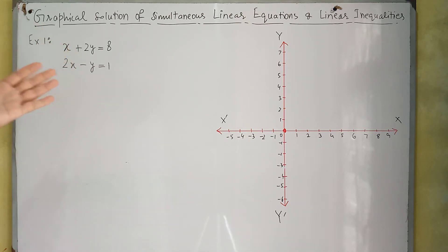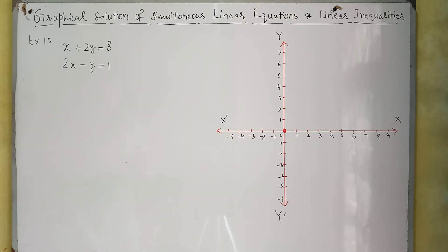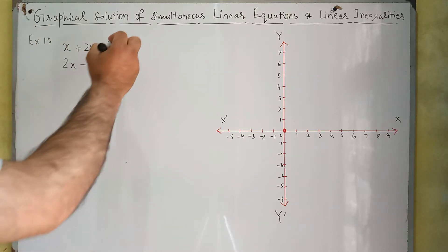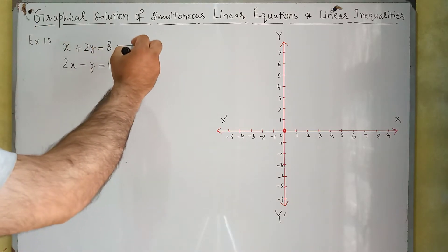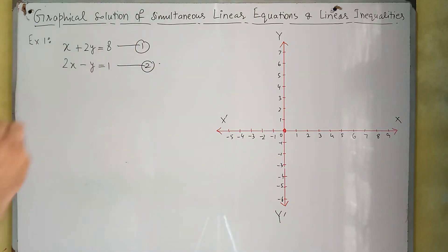In this two-by-two system, we have two variables and two equations, and we will get two answers: one for X and one for Y. First of all, we will draw a graph of these equations — this is equation 1 and this is equation 2.